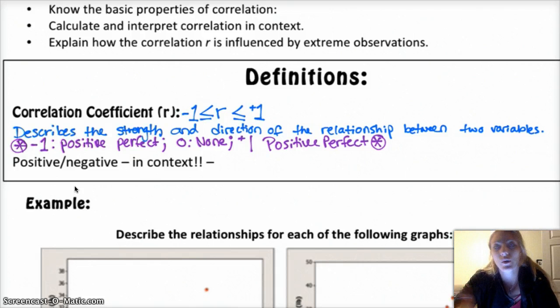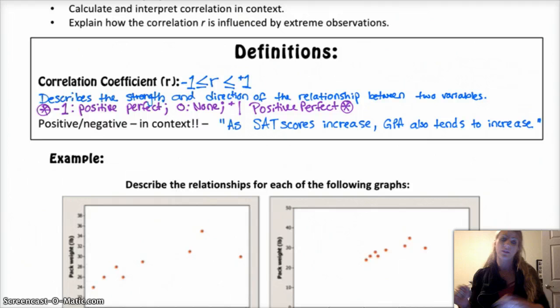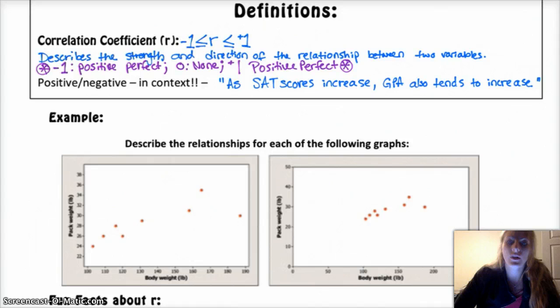What a positive or negative relationship means in context. Basically, all it means is that as one variable increases, the other one increases if it's a positive relationship. And as one increases, the other decreases for a negative relationship. And so if you have context, like the SAT and GPA problem, you would say something like, as SAT scores increase, so does GPA, to interpret in context. Here's an example. We've got two graphs. Describe the relationship for each of the following two graphs.